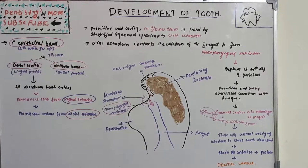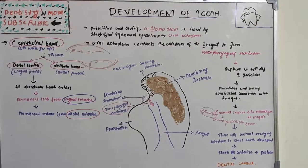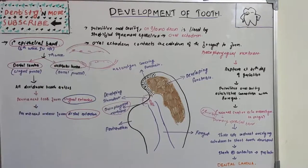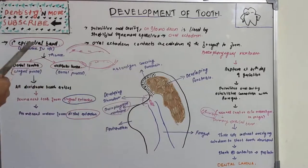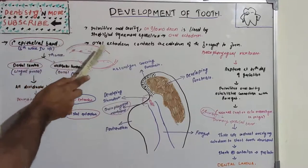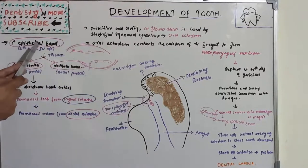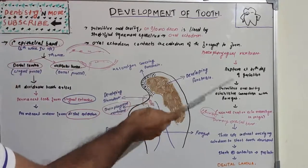The primary epithelial band gives rise to the dental lamina and vestibular lamina. It has two processes: the lingual process is the dental lamina — from which future teeth originate — and the buccal process is the vestibular lamina. The connective tissue proliferates in certain areas, causing rapid cell multiplication, giving rise to this epithelial band which invades the horseshoe-shaped upper and lower dental arches.